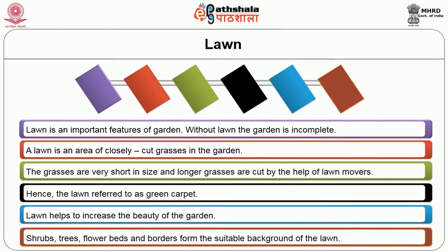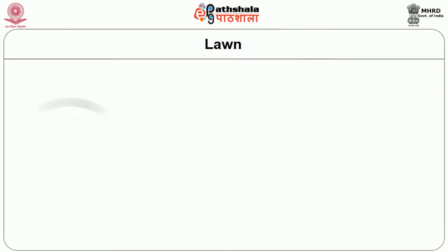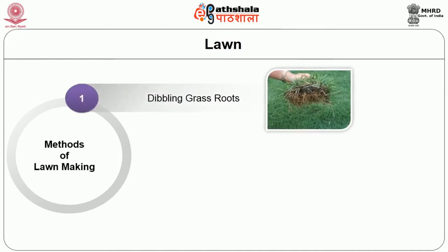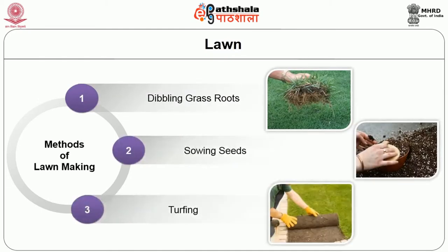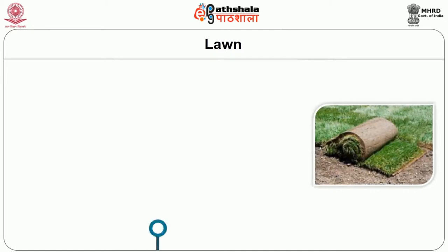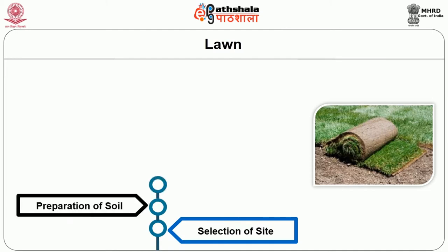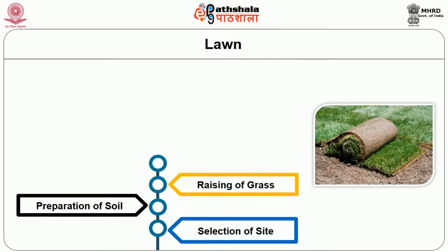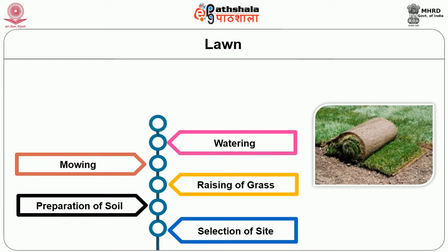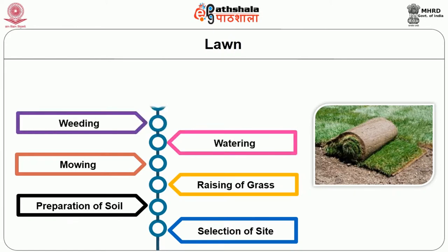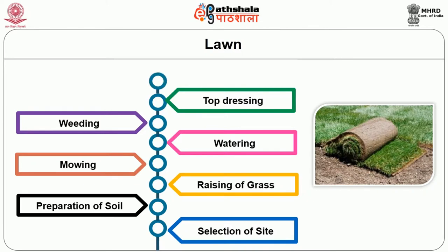Shrubs, trees, flower beds and borders form the suitable background of the lawn. Methods of lawn making: the common methods of making lawns are dibbling grass roots, sowing seeds, and turfing. For making a lawn, the following points should be taken into consideration: selection of site, preparation of soil, raising of grass, mowing, watering, weeding, top dressing, tree planting etc.